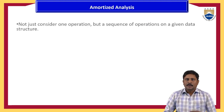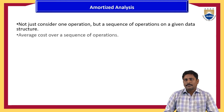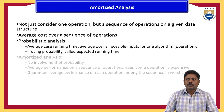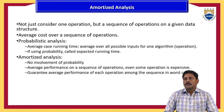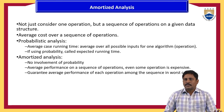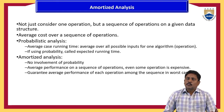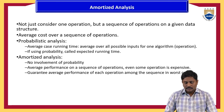In this way, we represent any time complexity value in terms of all five notations: big O, omega, theta, little o, and little omega. Big O represents worst case, omega represents best case, and theta represents average case time complexity.